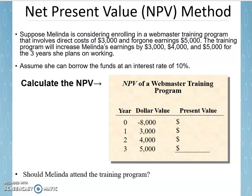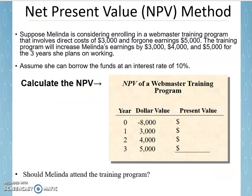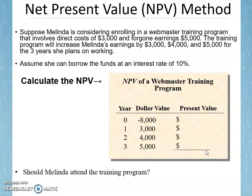Let's make it a little more realistic and look at Melinda. She's considering enrolling in a webmaster training program that involves direct costs of $3,000 and forgone earnings of $5,000. The training program will increase Melinda's earnings by $3,000, $4,000, and $5,000 for the three years she plans on working. Let's calculate the net present value by using our formula to find the present value of each of these payments and then add them up.